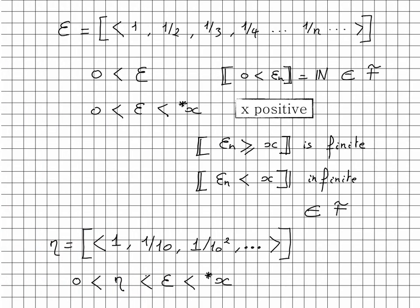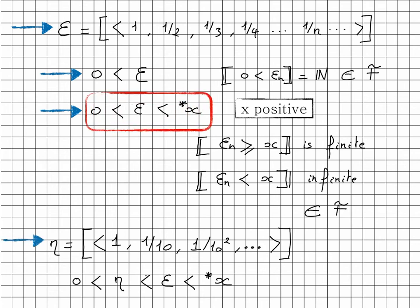We can also define Epsilon as the equivalence class of the sequence (1, 1/2, 1/3, ...) and show that Epsilon > 0, but Epsilon is also smaller than star-x for any positive real number x — making it an infinitesimal. We can then define Eta and show that Eta > 0 but Eta < Epsilon.